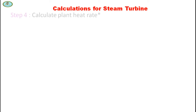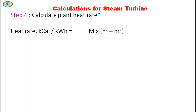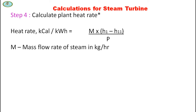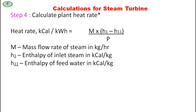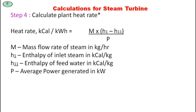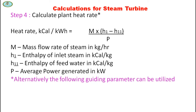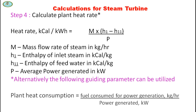In Step 4, calculate plant heat rate. Plant heat rate equals M times (H1 minus H11) divided by P, where M is mass flow rate of steam in kg/hr, H1 is enthalpy of inlet steam in kcal/kg, H11 is enthalpy of feed water in kcal/kg, and P is average power generation in kilowatts. Alternatively, plant heat consumption equals fuel consumed for plant generation in kg/hr divided by power generated in kilowatts.